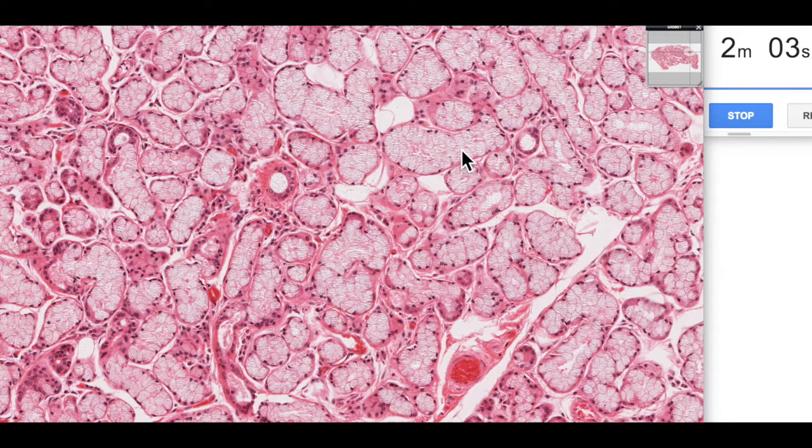They have the typical sort of mucus acinous type of appearance with basally located flattened nuclei and then most of their cytoplasm actually are relatively unstained. It's sort of this glass type appearance. And that's because mucus is a very glycosylated glycoprotein.